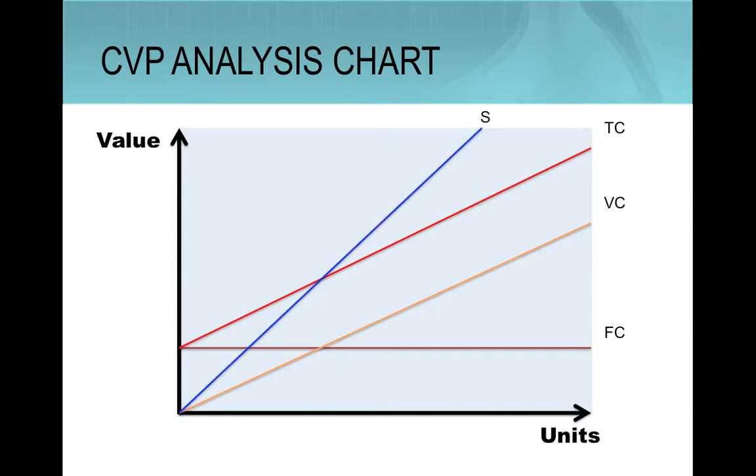Finally, to represent sales, the line should begin at the origin such as the variable costs but will have a greater slope to ensure that the contribution margin, represented by the difference between sales and variable costs, is always larger than zero.